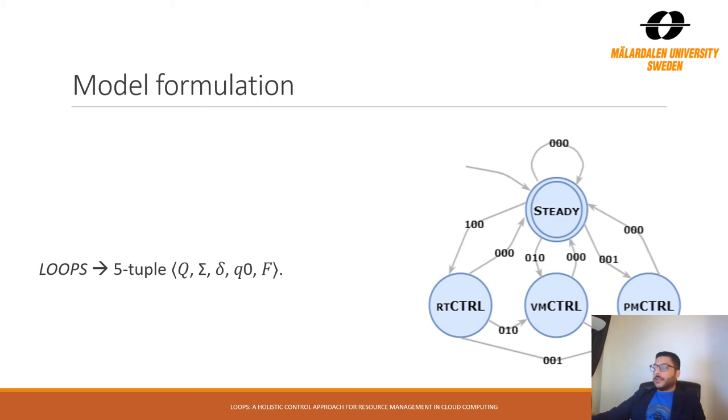The second tuple is a finite state of alphabet symbols. We have these alphabet symbols, 000, 100, 010, 001, and extra as we can see here. The third tuple is a set of transition functions. So, for example, if we want to go from one state to another using a specific alphabet symbol, we can go from this state to PM control state if and only if MMU triggers this vector.